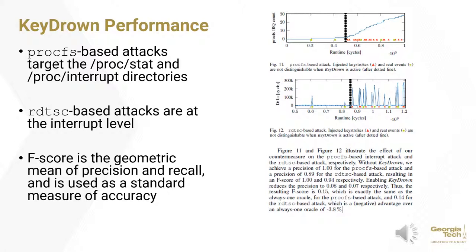Let's examine the performance of KeyDrown against two typical timing attacks. The PROCFS-based attacks are any attacks that target the PROC STAT or PROC INTERRUPTS directories. The RDTSC-based attacks are those that occur at the interrupt level. F-score was used as the standard measure of accuracy, which is a geometric mean of precision and recall. An F-score of 1 describes a perfect side channel, while an F-score of 0 describes that a side channel provides no information at all. Without KeyDrown, the PROCFS-based attack achieved a perfect F-score of 1, and the RDTSC-based attack achieved 0.94. After KeyDrown was enabled, the precision was reduced to 0.08 for PROCFS and 0.07 for RDTSC, showing a huge drop in the information provided from the side channel. The visualization shows the two attacks, with real keystrokes plotted as green dots and fake keystrokes injected as red triangles, with the dotted line showing where KeyDrown was enabled.